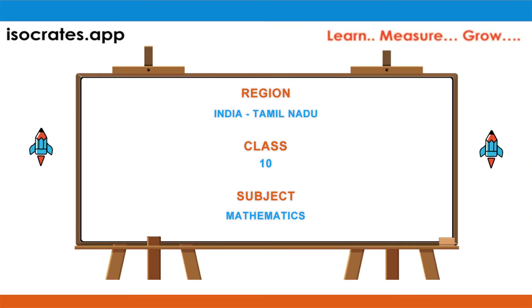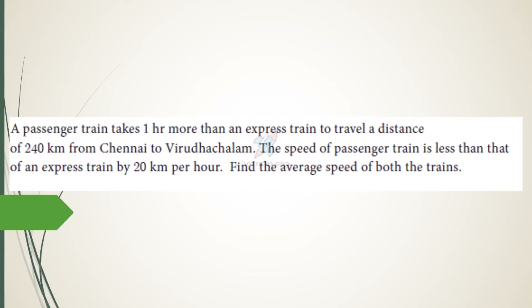Welcome to isocrats.app, a platform where you learn, measure, and grow. In this video, we will show a quick and simple way to solve an application-oriented problem of a quadratic equation. A passenger train takes one hour more than an express train to travel a distance of 240 kilometers from Chennai to Virudachalam. The speed of the passenger train is less than that of the express train by 20 km/h. Find the average speed of both the trains.